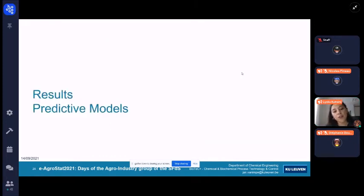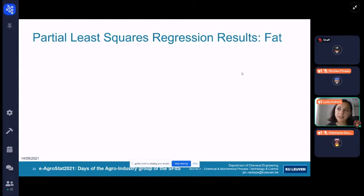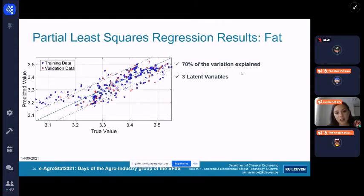Now, I move on to the results of the predictive models. Unfortunately, the predictive models were performing well only in two cases: in the case of fat, predicting using partial least squares in order to predict the fat content and the yield. Here, you can see the results of the fat content. As you can see, the PLS model is performing well. 70% of the variation of the data is explained.